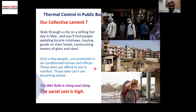This last slide is a little disturbing, but we are all aware of it. If we walk through a stifling city, we find people pedalling rickshaws, hauling goods on their heads, constructing all the wonderful buildings we work in — but only a few people are protected by air conditioned homes and offices. We must have more public spaces. Those who can afford are in comfort; those who can't are becoming worse off. Our wet bulb temperature is rising and rising, so staying comfortable through the body's evaporative cooling — sweating — is becoming harder.